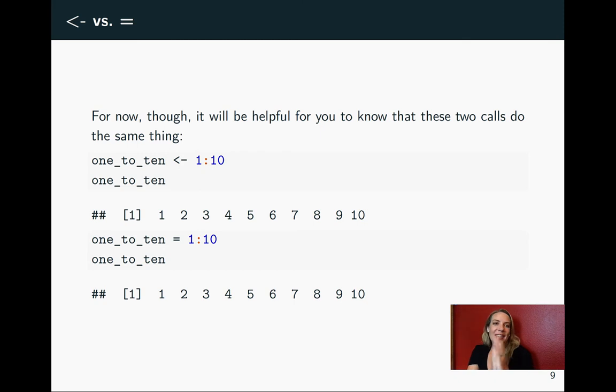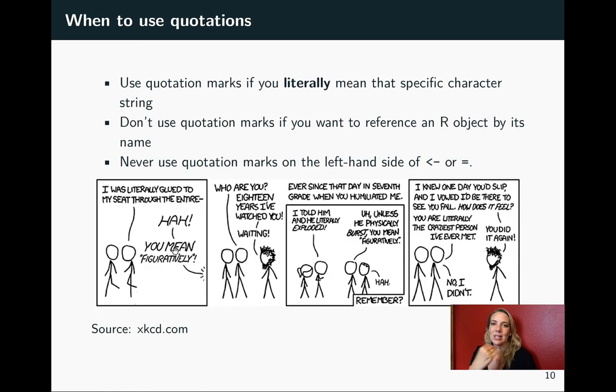For right now, this is getting a little bit subtle. For right now, what I want you to know mainly is that these do the same thing. So if you're looking at somebody else's code or example code and you see an equal sign, it's doing pretty much the same thing as the gets arrow. You should understand that if you look at this piece of code where we're assigning a vector 1 to 10 with that string of 10 numbers versus this piece of code where we're doing the same thing, but I've replaced the gets arrow with an equal sign, that that's doing exactly the same thing.